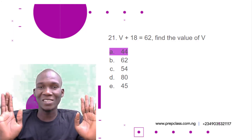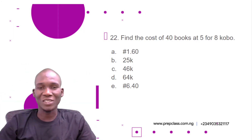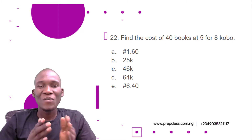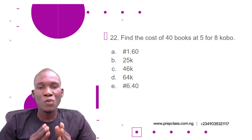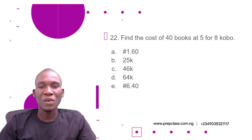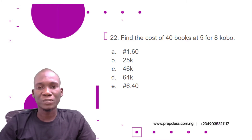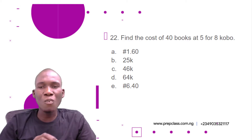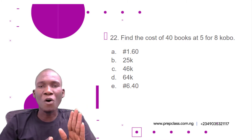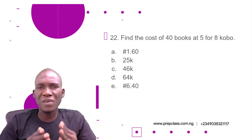Let's move to the next question. Question number 22: find the cost of 40 books at 5 for 8 cobble. We need to find how much it costs to buy 40 books if 5 of those books cost 8 cobble.